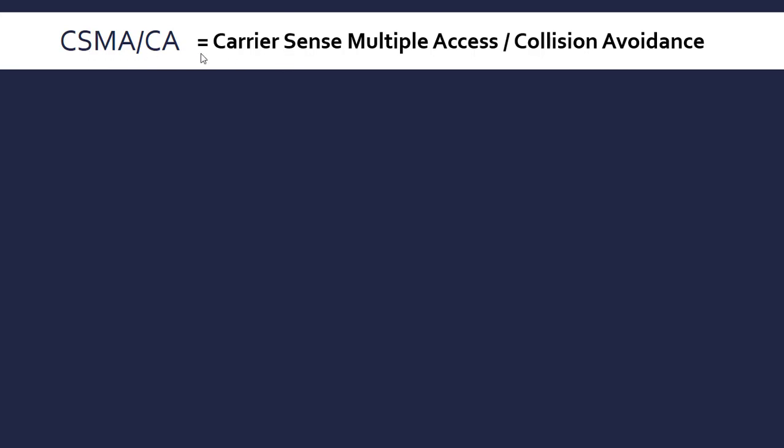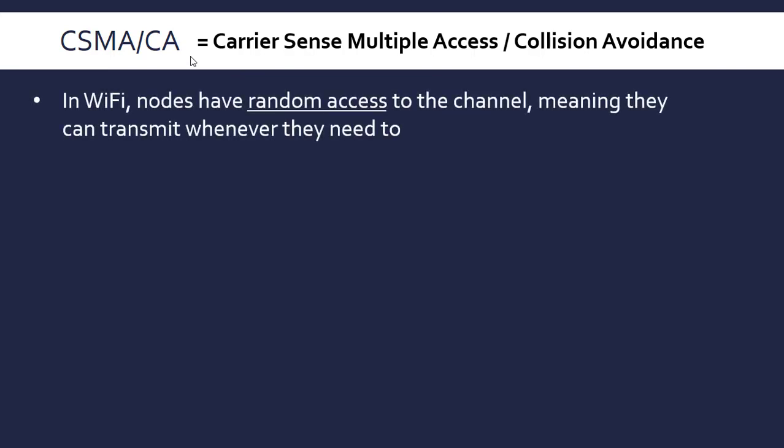Make sure you remember what this is, because you might be asked to expand the acronym in an exam. Carrier Sense Multiple Access with Collision Avoidance — and we write the slash in, because there is a version of this for Ethernet, which is slash CD, Collision Detection, but this is for Wi-Fi.